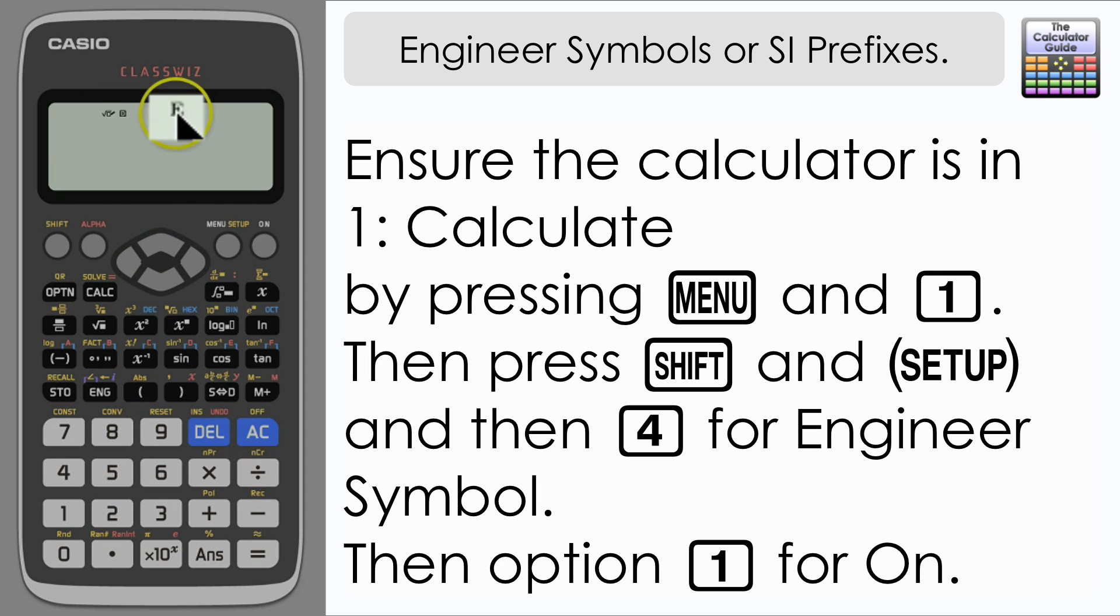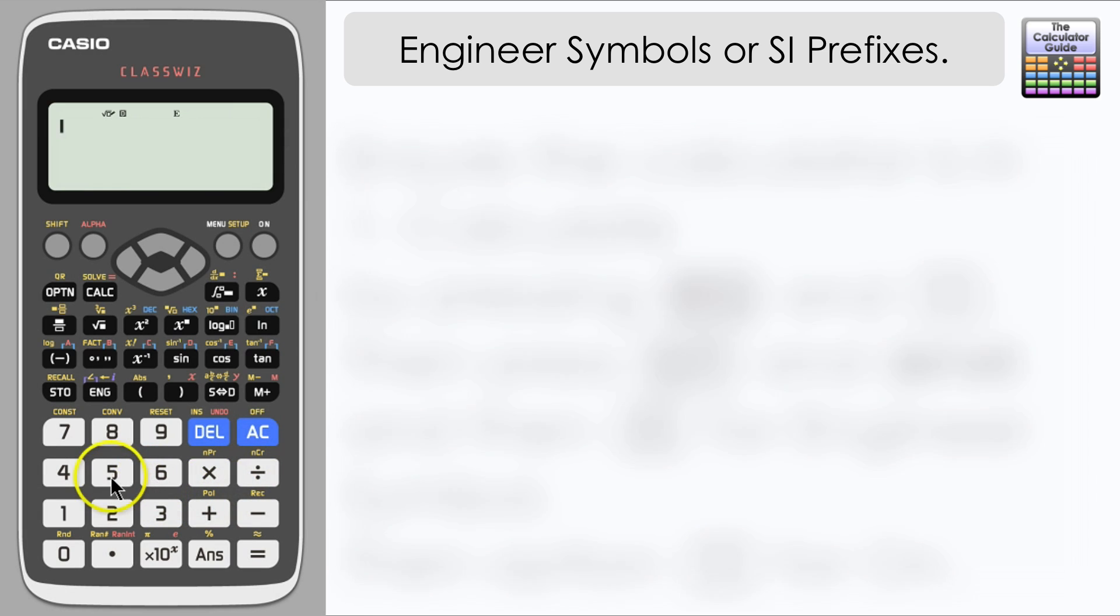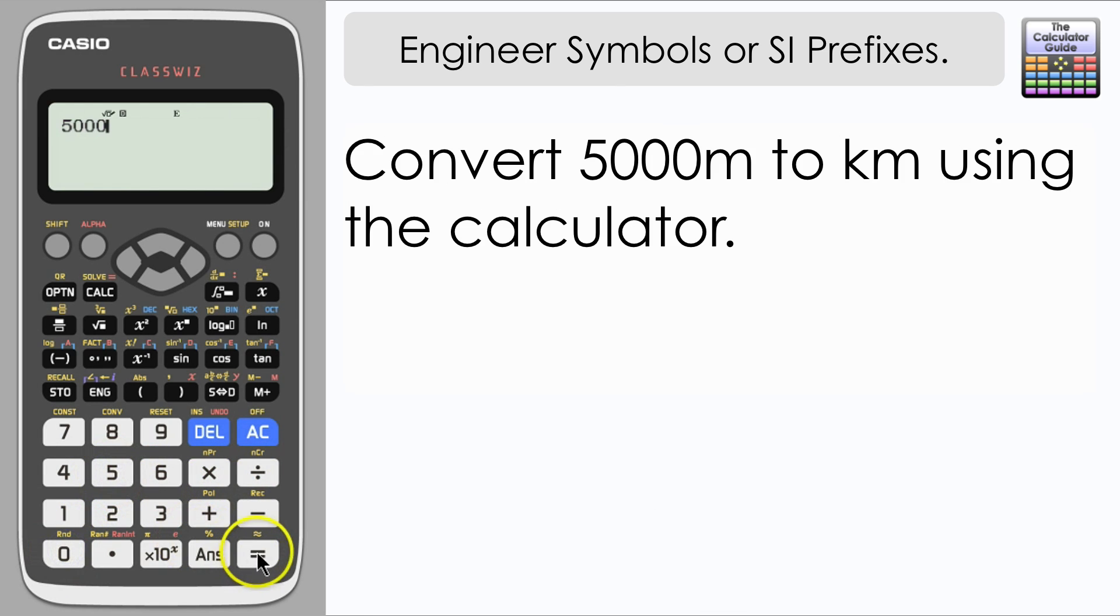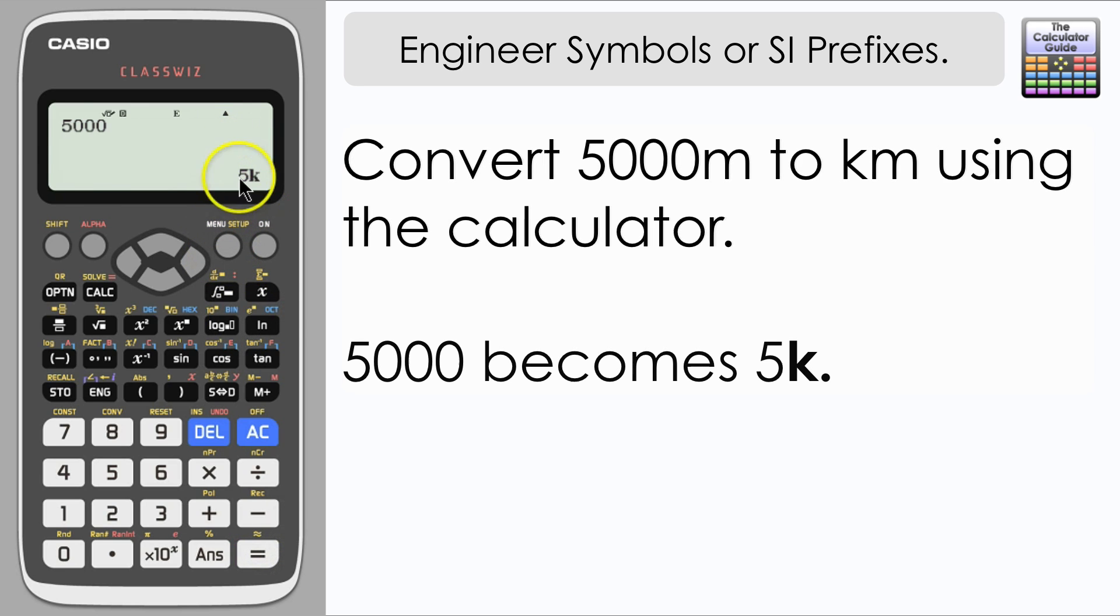So now we have engineering symbol on. We can see that there is a capital letter E displayed at the top of the calculator screen here. So if I input the example of the number 5,000, say if it was 5,000 meters, then the calculator will give the answer of 5k, i.e., 5 kilometers, so it's converted it to the SI unit relevant to a thousand or 10 to the power of 3.